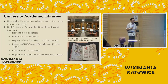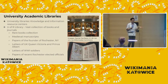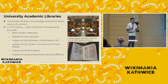University libraries are major knowledge and information centers. They hold not only books but also access to journal articles behind paywalls. The University of Rochester, for example, has a vast rare books collection consisting of various manuscripts ranging from medieval manuscripts, papers of the founder of Rochester New York, letters of Queen Victoria and Prince Albert, letters of World War I soldiers, to papers of recent Rochester elected officials. This illustrates the wide breadth of resources available that libraries can contribute to the Wikipedia movement by bringing them online.